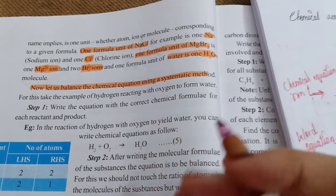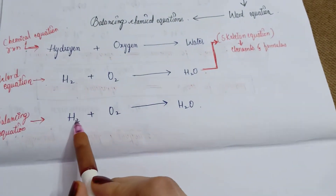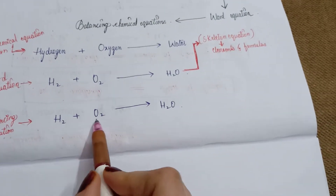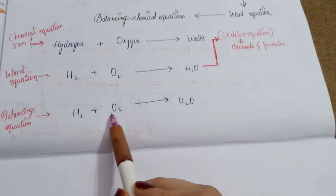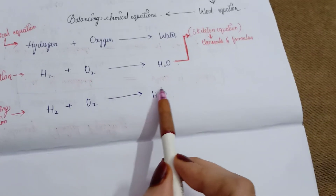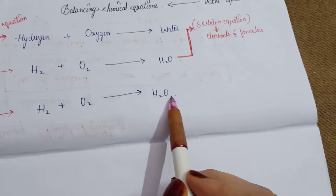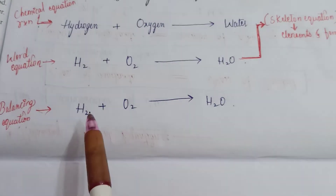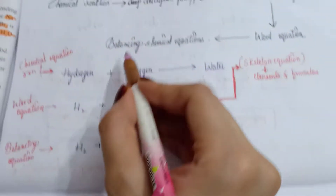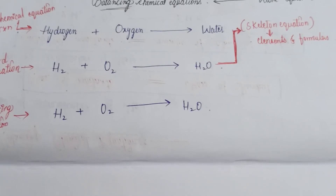Now let us balance a chemical equation step by step. We want to balance the formation of water: H₂ + O₂ → H₂O. First, let's check: the left side has two hydrogens and two oxygens, but the product has two hydrogens and only one oxygen. So this equation is not balanced.